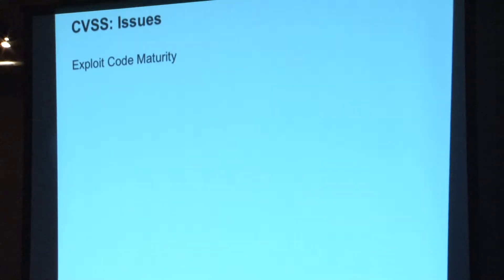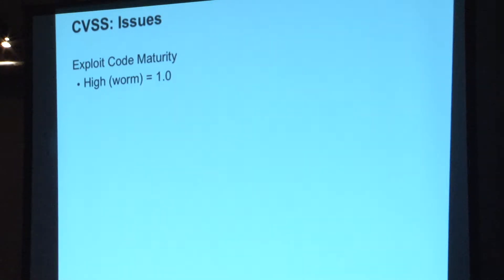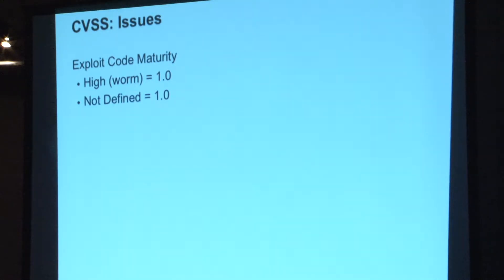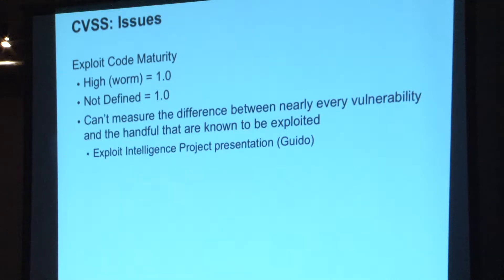I talked about threat being broken. Exploit code maturity — the value for the metric of 'high,' meaning there's a worm going around with autonomous code and lots of exploitation — it's 1.0. If you don't know what the exploit activity is, it's also a 1.0. So this is inverted in my mind. If every vulnerability were exploited heavily, sure, this would make sense. There are — how many vulnerabilities publicly disclosed in a year? Anybody know? Want to guess?